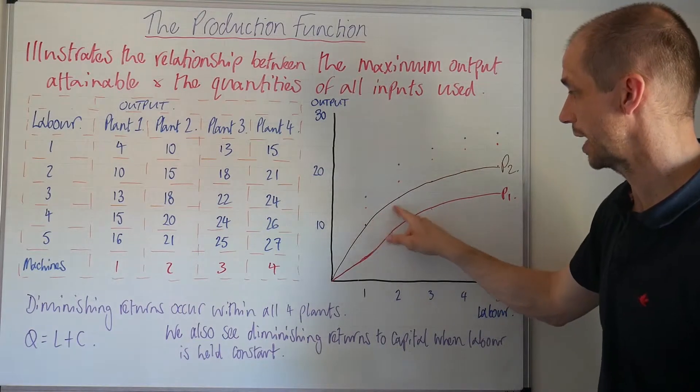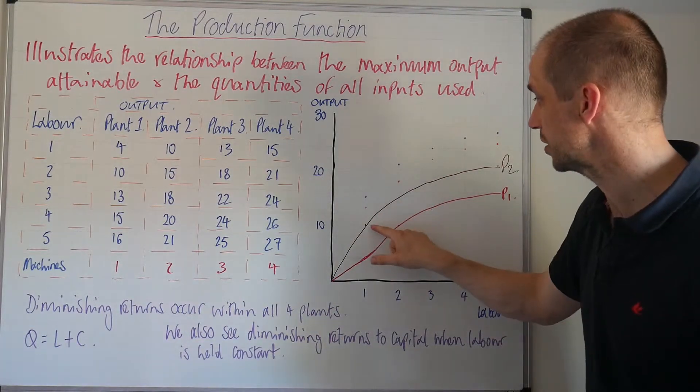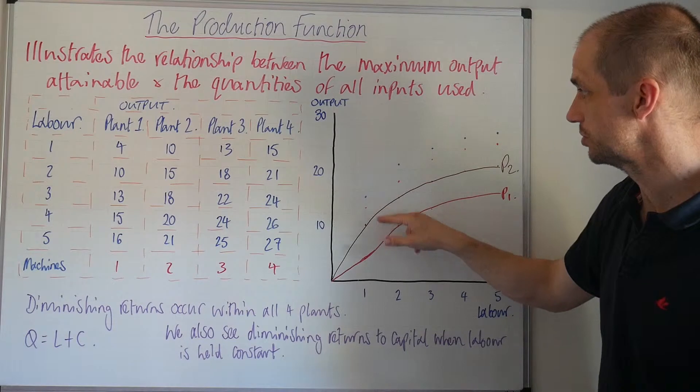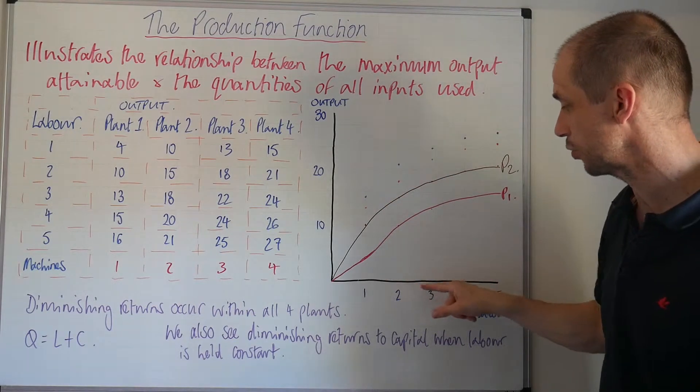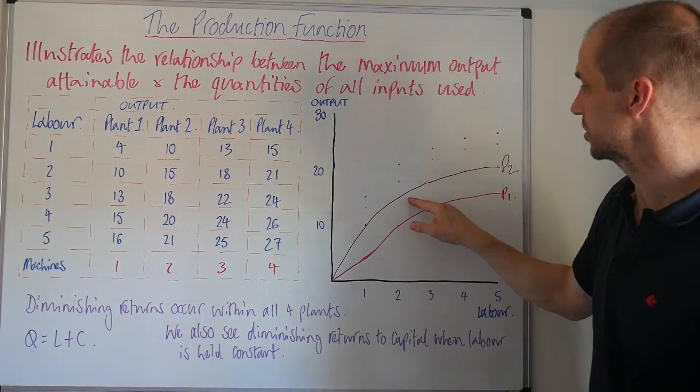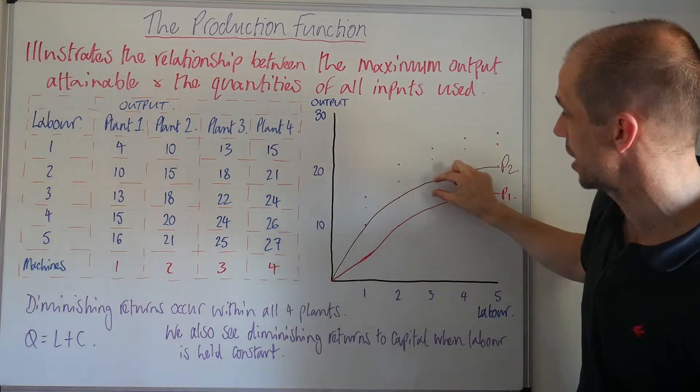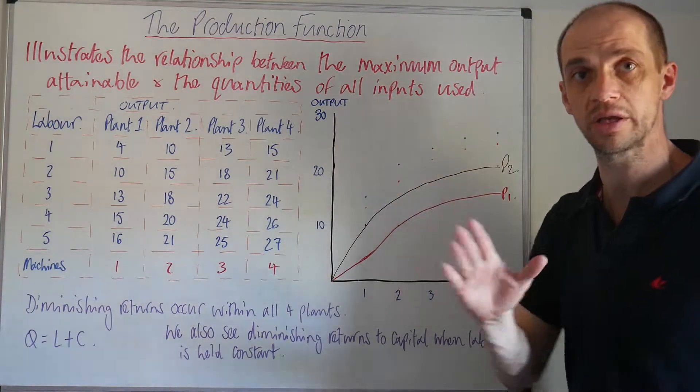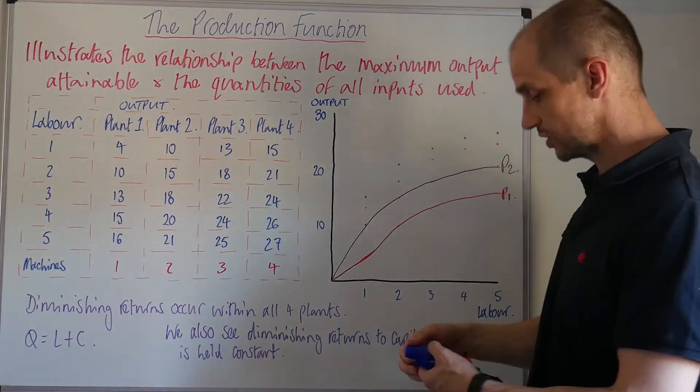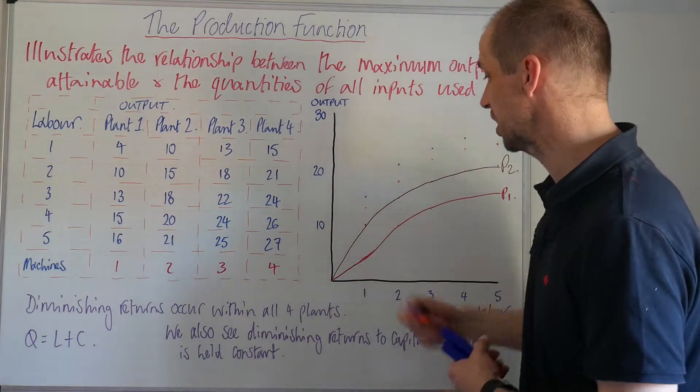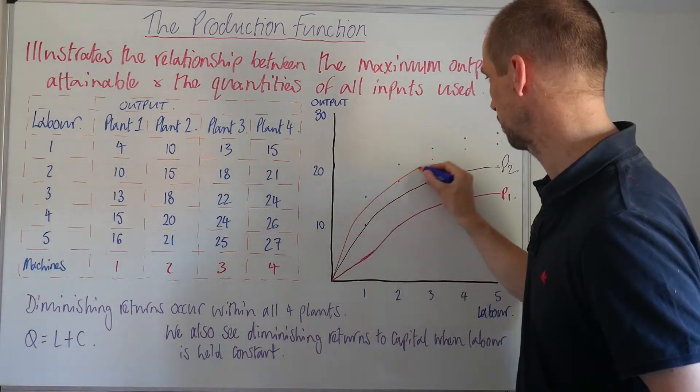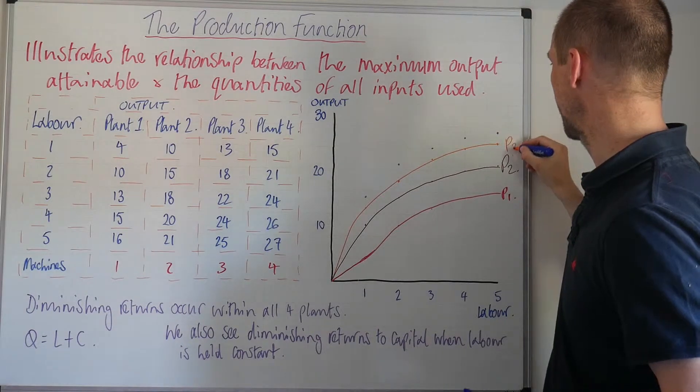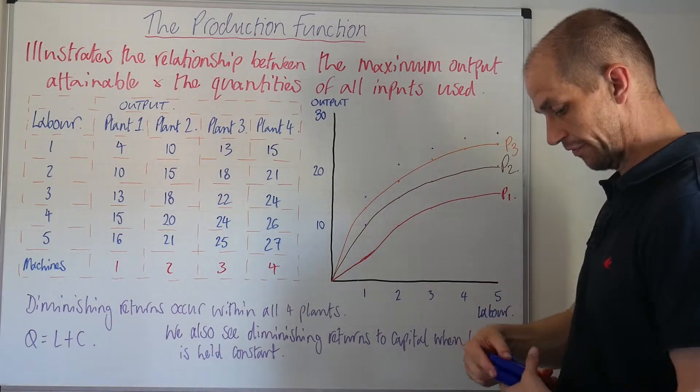So we see five as helping to represent this gradient here in terms of the outputs and the increase in the labor, but of course that does begin to slow down and the output generated slows quite considerably as we progress through this. And once again we'll see this with regard to plant number three and of course with plant number four.